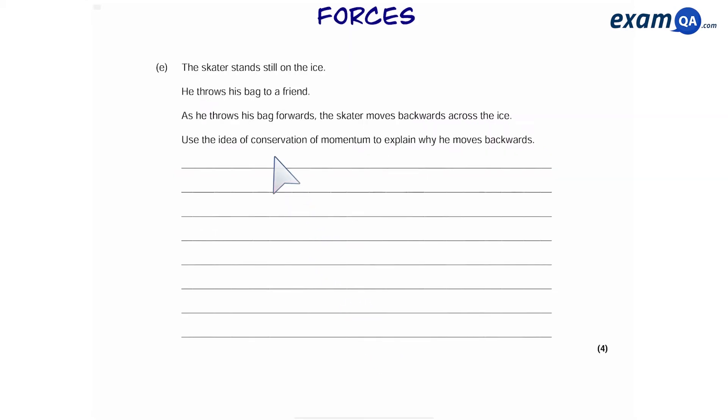Okay, the final part now. Here we have to try and get all four marks. The skater is standing still on ice. He throws his bag forwards and moves backwards across the ice himself. Use the idea of conservation of momentum to explain why he moves backwards. I think it's best if we can picture this.